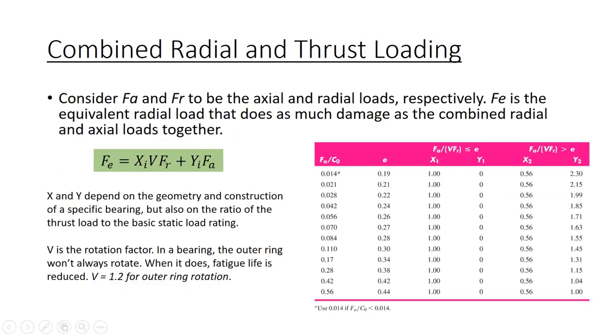The main equation we'll use is shown in the green box here. Consider FA and FR to be the axial and radial loads respectively. FE is then the equivalent radial load that does as much damage as the combined radial and axial loads together. X and Y depend on the geometry and construction of a specific bearing, but also on the ratio of the thrust load to the basic static load rating. You'll see that there are two outcomes for XI and YI, so either X1, Y1, or X2, Y2.